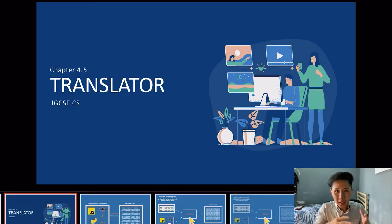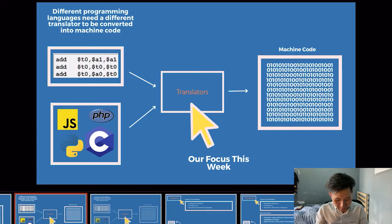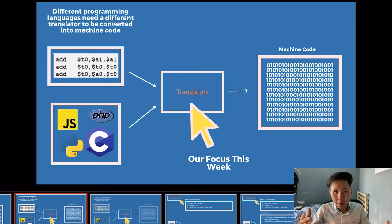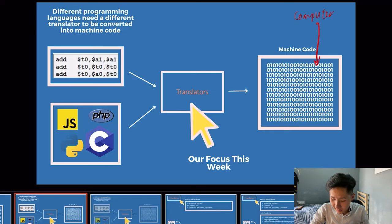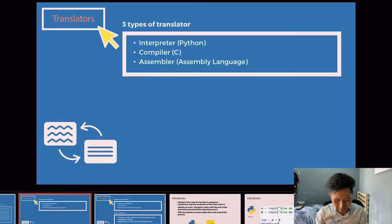In this video, we're going to learn what a translator is. It is basically a piece of code that translates a programming language into machine code. Different programming languages — whether JavaScript, C++, or Python — need to be converted into machine code, because this is the only language that computers can understand. The three types of translators are the interpreter, the compiler, and the assembler.